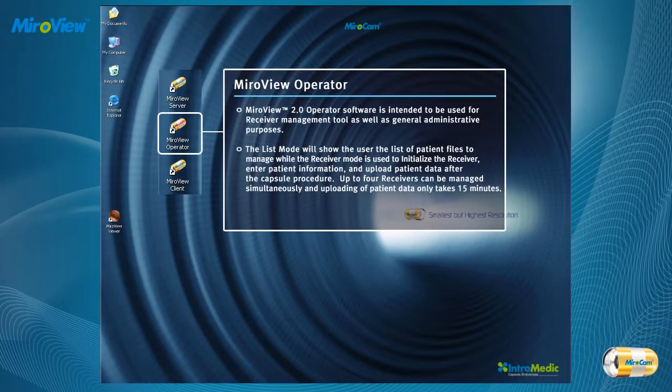MiroView 2.0 Operator software is intended to be used as a receiver management tool as well as for general administrative purposes. The list mode shows the user a list of patient files to manage, while the receiver mode is used to initialize the receiver, enter patient information, and upload patient data after the capsule procedure. Up to four receivers can be managed simultaneously and uploading of patient data only takes 15 minutes.